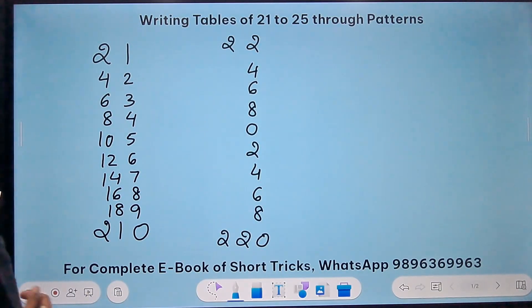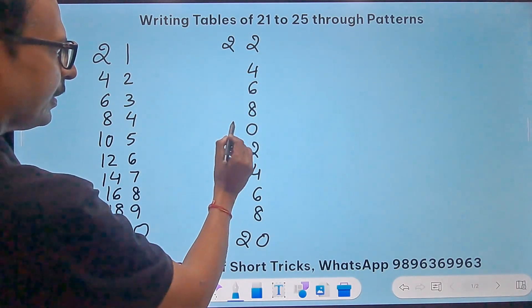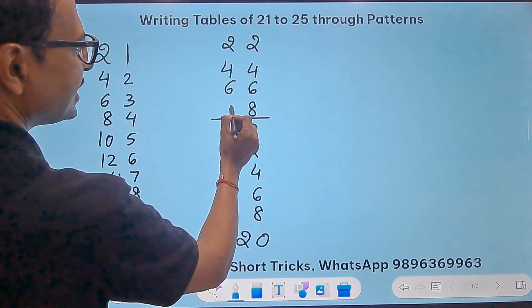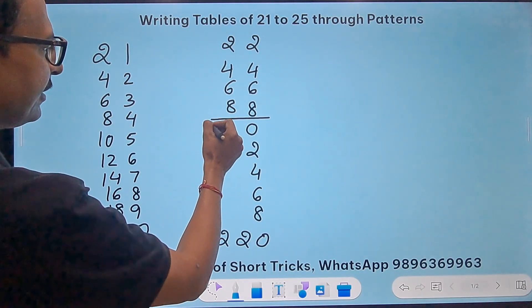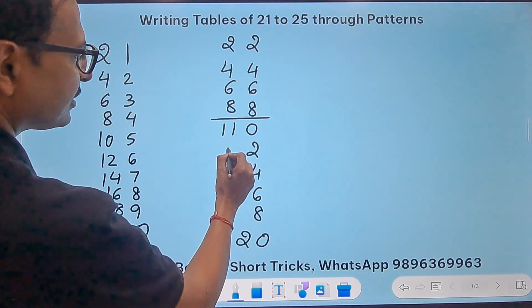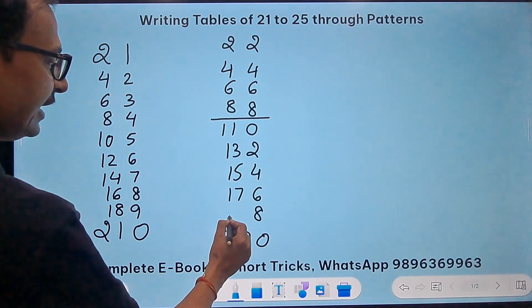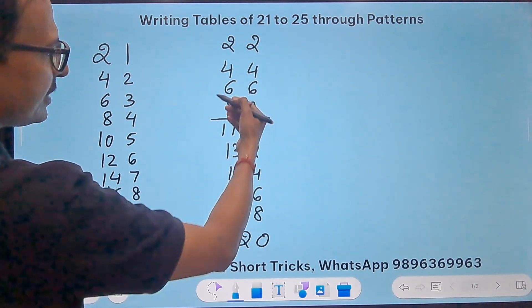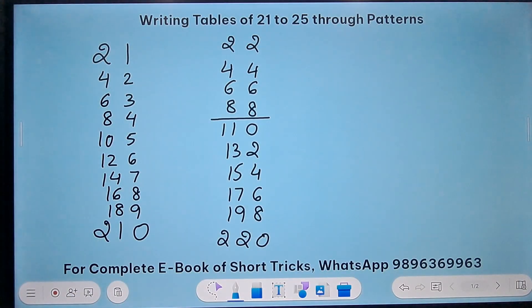That is the pattern in the unit digit. For the tens digit, start writing the even numbers again: 2, 4, 6, 8. But after 8 we change the pattern — skip 9 and 10, start with 11. Since this is an odd number, write the odd numbers: 13, 15, 17 giving 176, and 19 giving 198. So up to 8 we have even numbers, from 11 onwards odd numbers, and the last one is obviously 220.